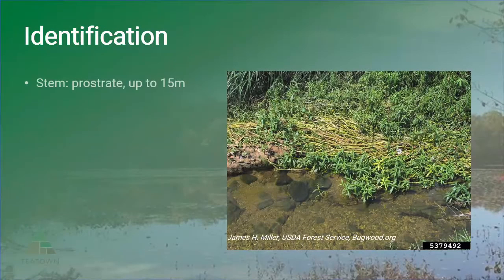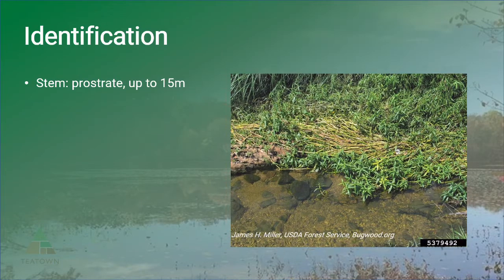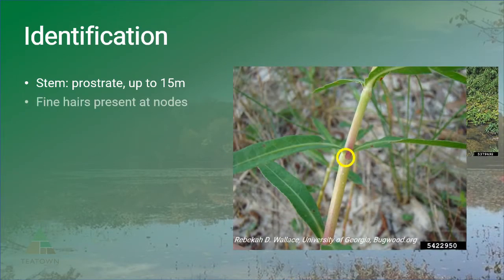The hollow floating stem of this invasive plant can reach up to 15 meters long, with several nodes that allow for growth of new roots and stems. Fine hairs can also be seen at the nodes, and this section of the stem is typically pinkish to pinkish green in color.